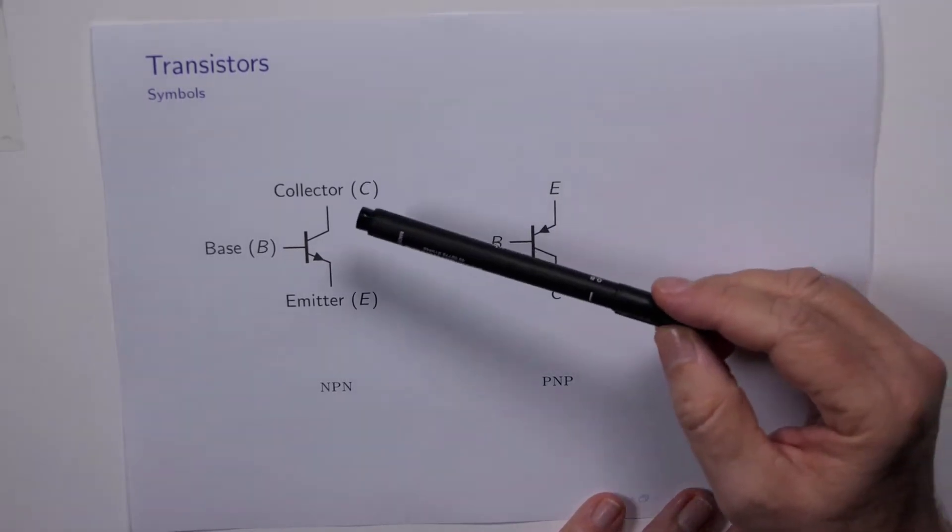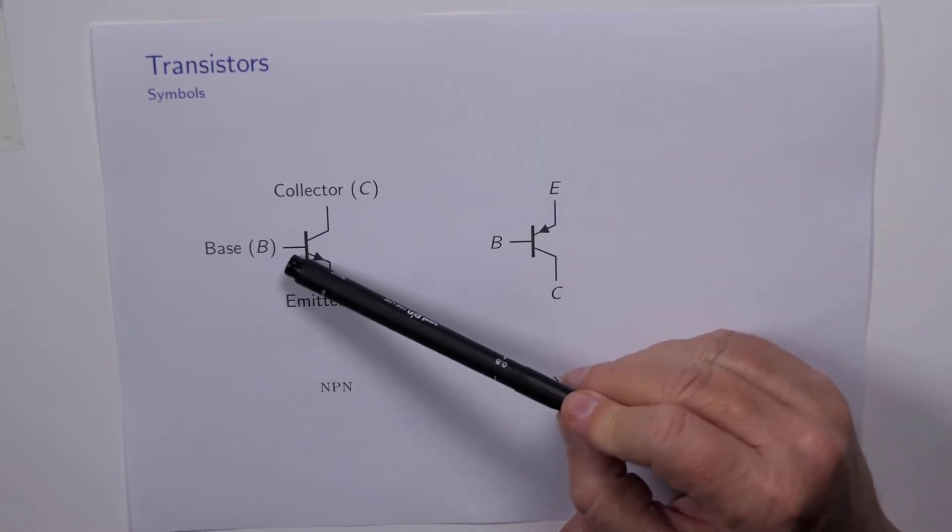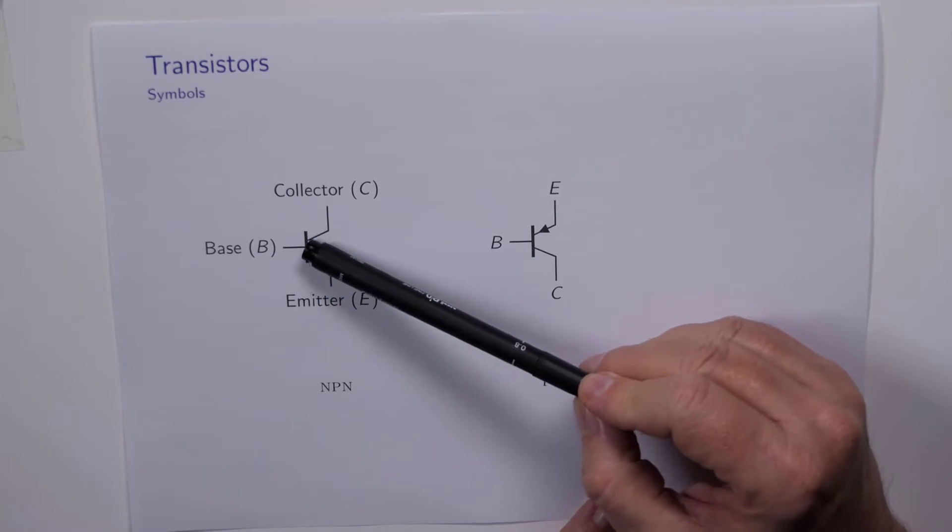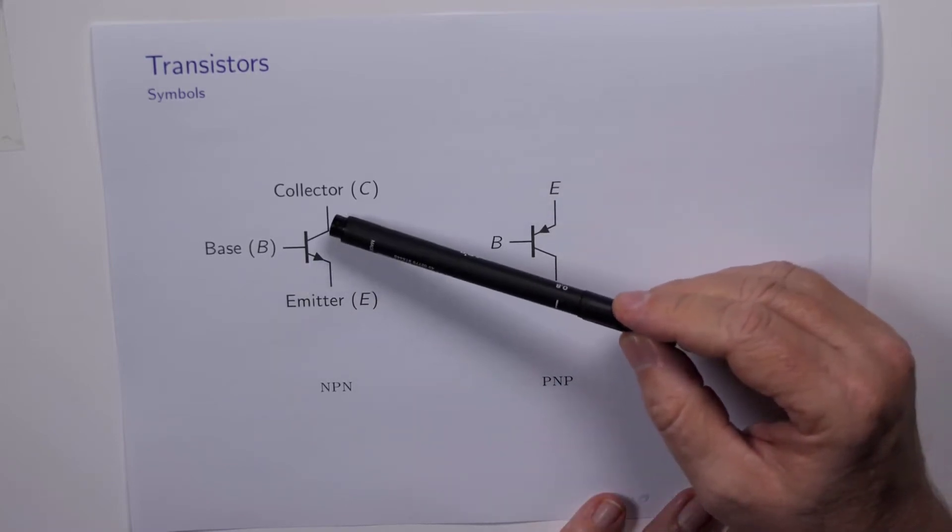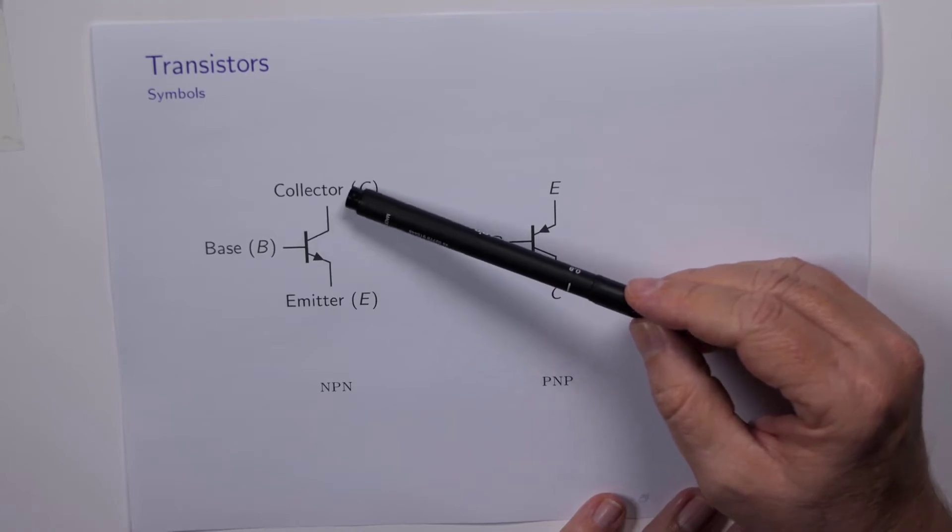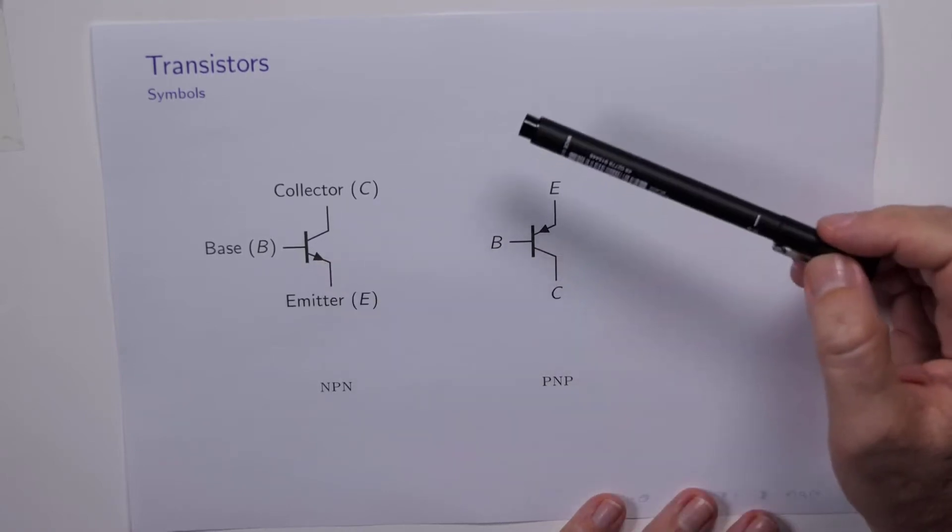The terminals have specific labels. This one here sticking out from this line segment is called the base. The other terminal without an arrow is called the collector. The terminal with an arrow is called the emitter.